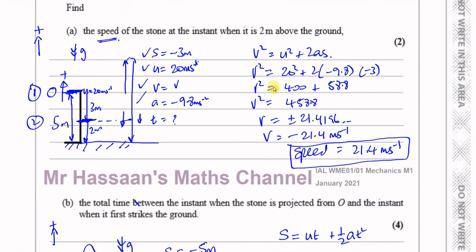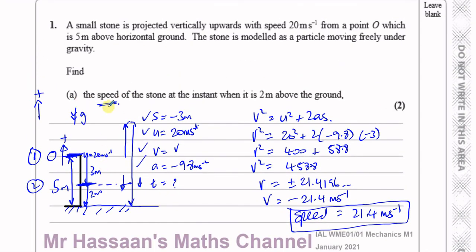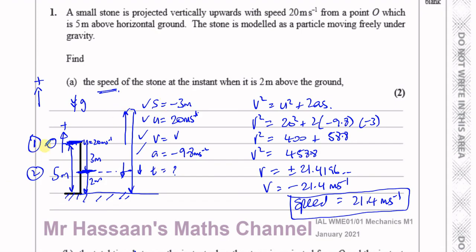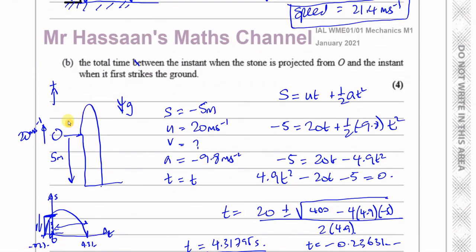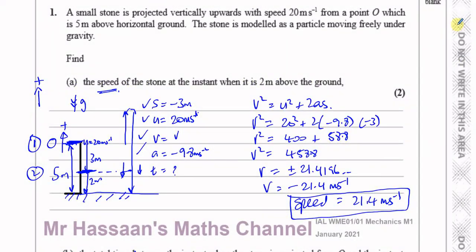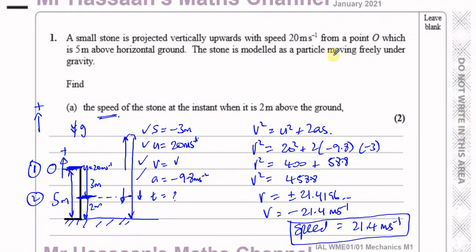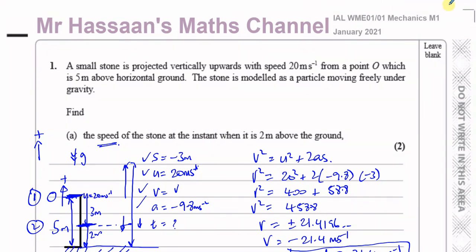To summarize the key points: S in SUVAT means displacement, not distance traveled. Taking O as the initial position, S was minus 3 for part A and minus 5 for part B, because upwards was taken as positive. Other questions from this paper can be found in the playlist linked in this video. There's also a kinematics playlist and a subscribe button available. Thank you for watching.